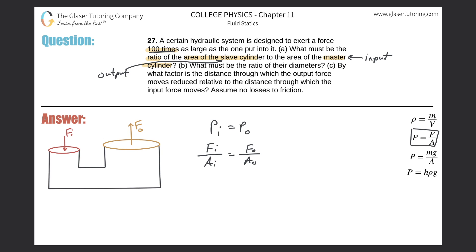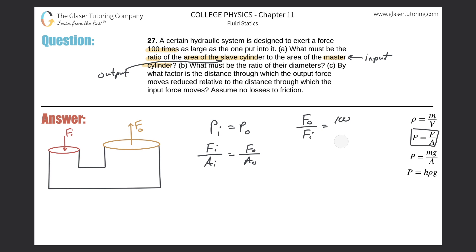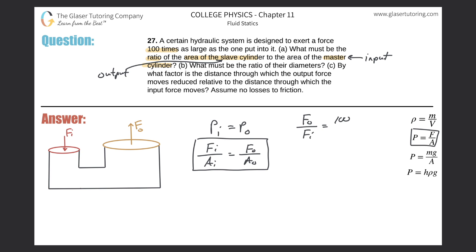The output force is 100 times as large as the input force. So the ratio of output force to input force is 100 over 1, which is just 100. This fraction equals 100, so now I'll manipulate the equation to isolate the area ratio on one side.